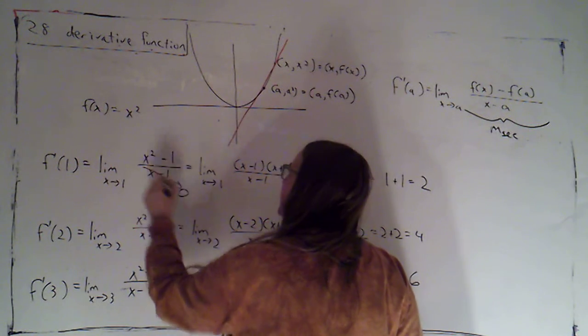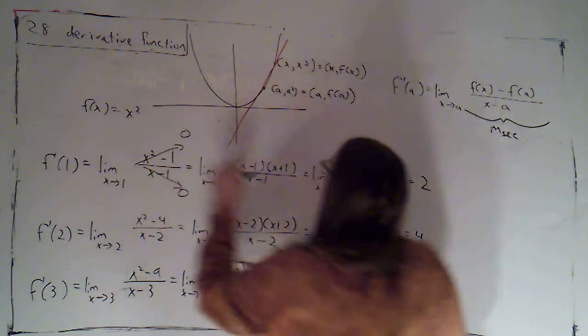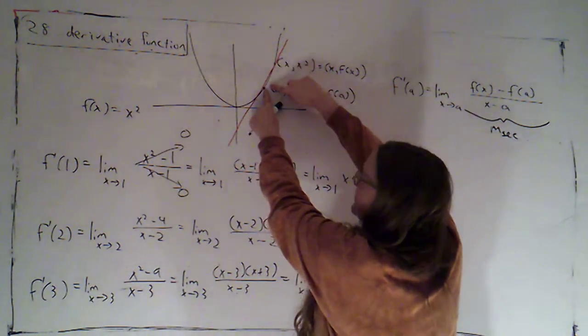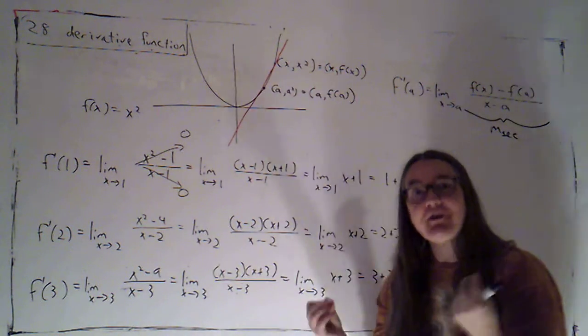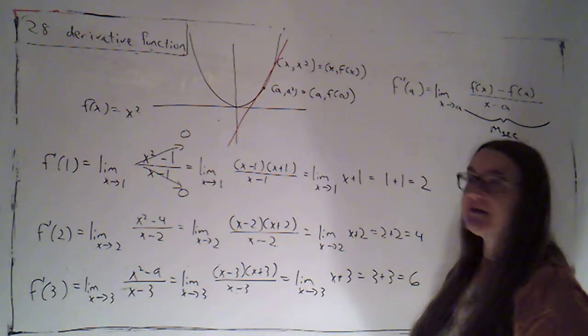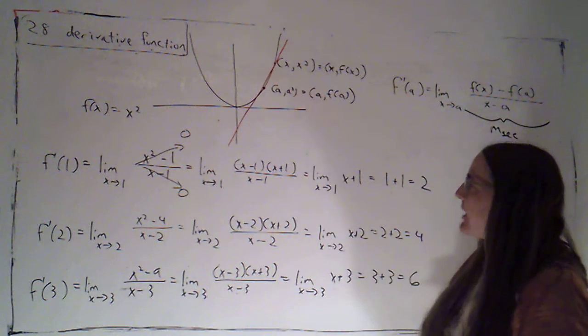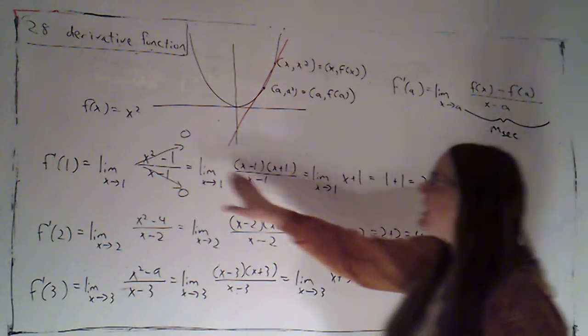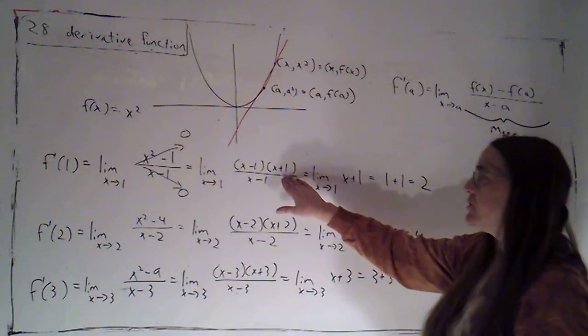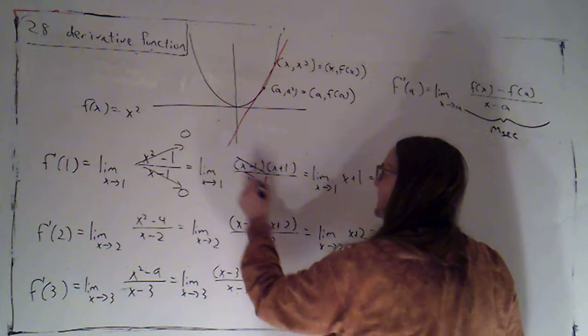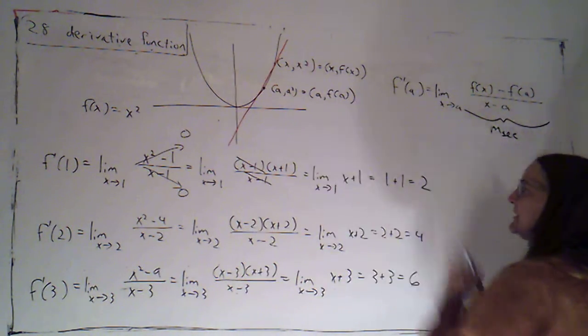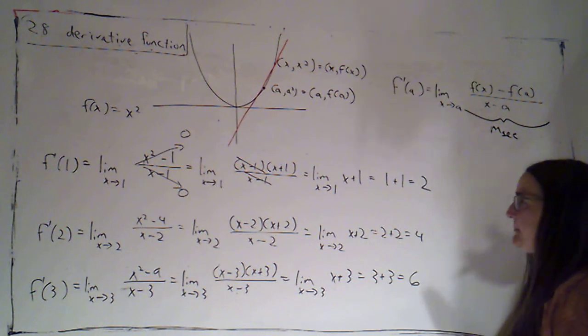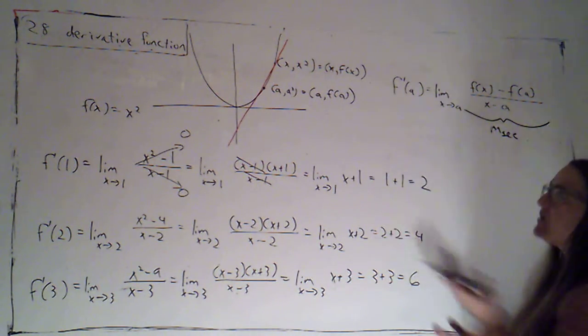Because if this point is getting closer and closer to this point, both the rise and the run are going to 0. Since we're working with polynomials here, we know to just factor and cancel. So the top factors as a difference of two squares. We cancel the x minus 1. We get the limit as x goes to 1 of x plus 1. We get 2.